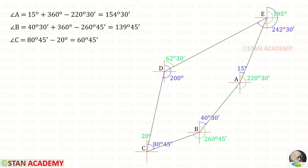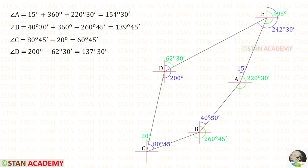Now, let us find the interior angle at station C. We need to find this angle, which can be easily found by subtracting this angle from this angle. So, 80 degrees 45 minutes minus 20 degrees gives us the interior angle at station C, which is 60 degrees 45 minutes. In the similar way, we can find the interior angle at station D. We need to find this angle, which can be found by subtracting this angle from this angle, giving us the interior angle at station D, which is 137 degrees 30 minutes.